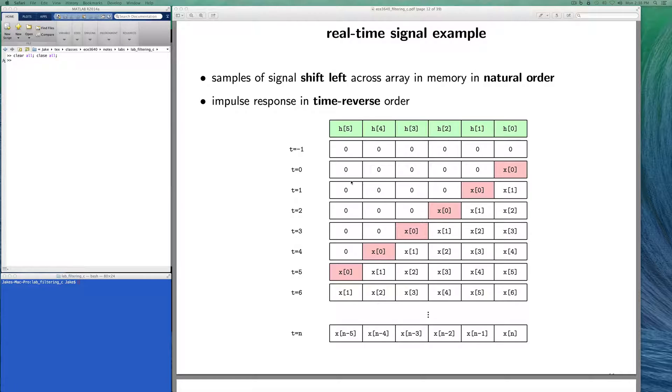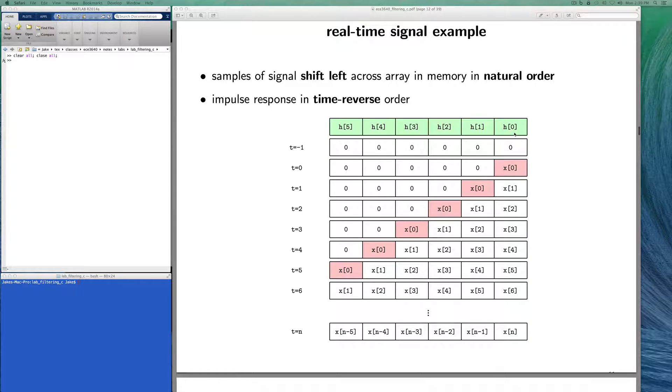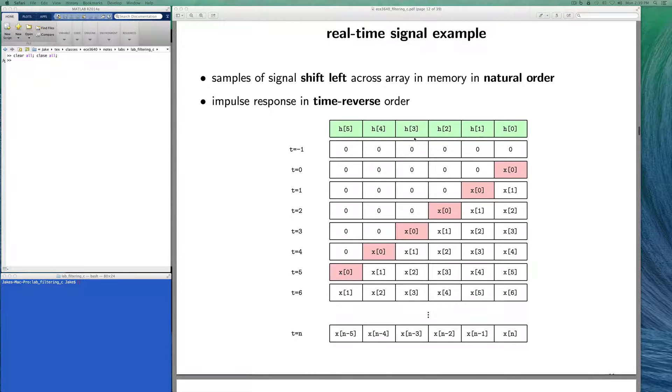In this example, notice that the samples of the impulse response are in time-reversed order. What we have to do is allocate memory for the impulse response, and then allocate the same number of memory locations for the data. We're going to have the data sliding across this array, and at each time we will do multiply, multiply, multiply, multiply and accumulate that to produce the output.